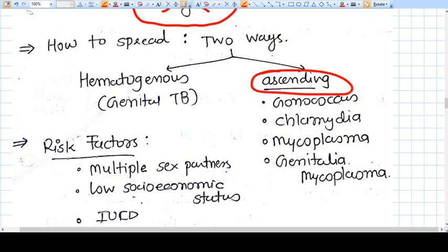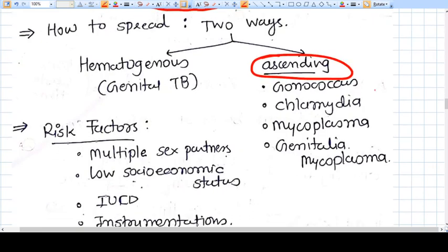Ascending with sperms in the genital tract, gonococcus, chlamydia, and mycoplasma—all these three main organisms cause ascending infection of PID through this route.